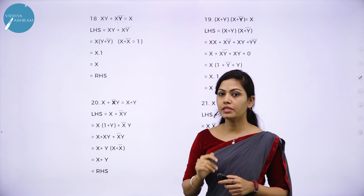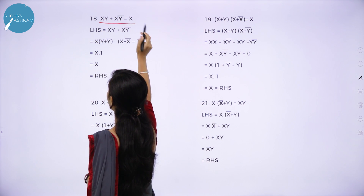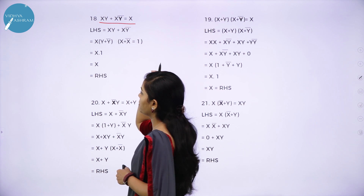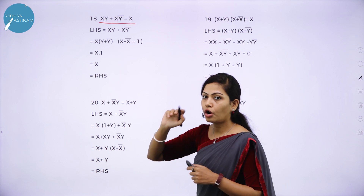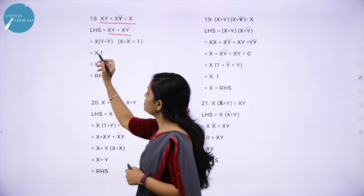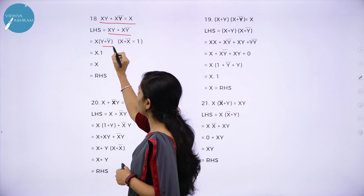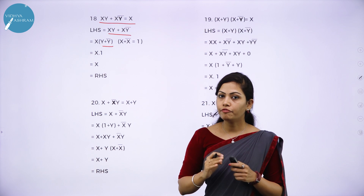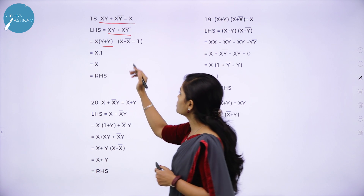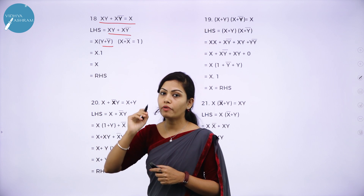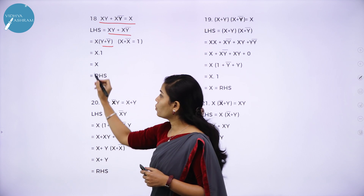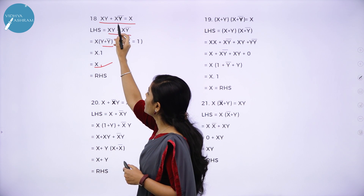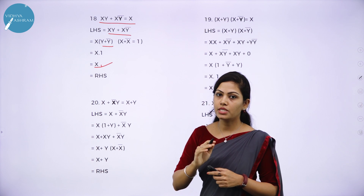The next theorem is theorem 18: xy + xy̅ = x. Taking LHS, which is xy + xy̅, you can take x as a common factor, giving x(y + y̅). Since x + x̅ = 1, y + y̅ is also equal to 1. So in place of y + y̅, write 1, and x × 1 = x. This is your RHS. So LHS equals RHS.